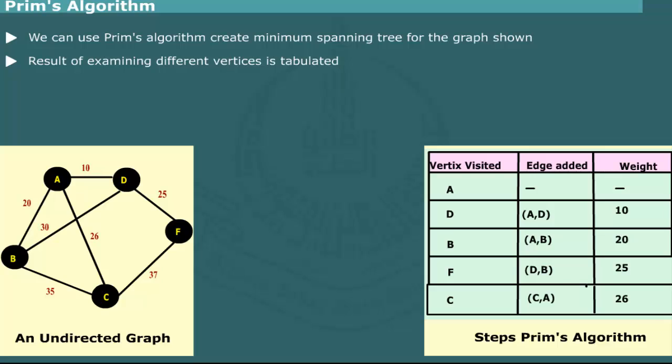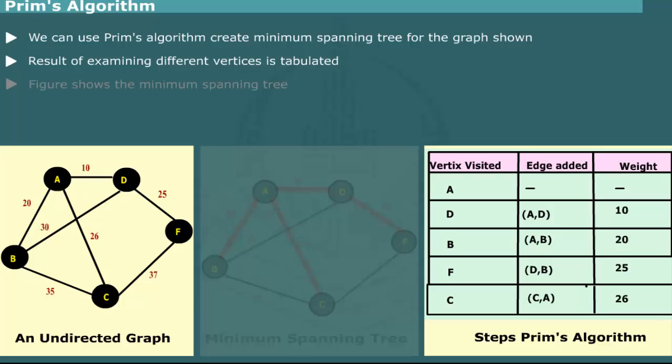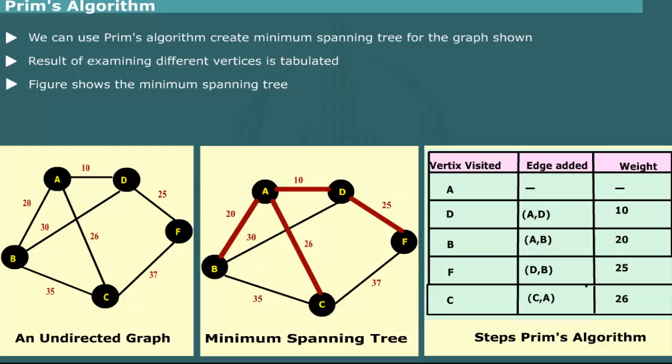The vertex A is selected as the initial vertex to be added to the tree. Figure shows the minimum spanning tree for the graph. The edges of the trees are shown in thick lines.